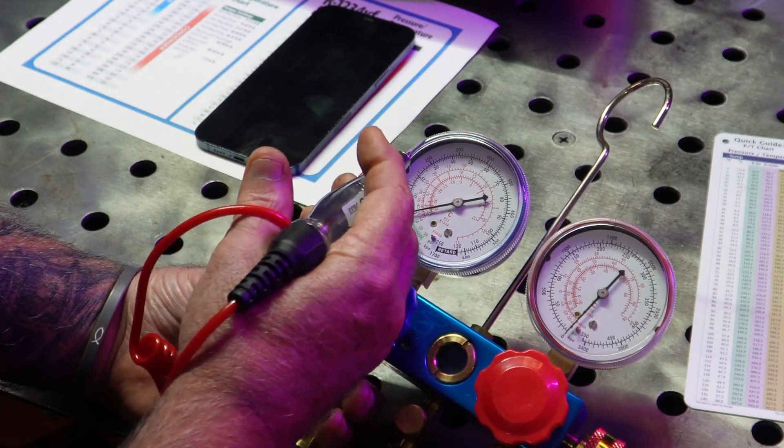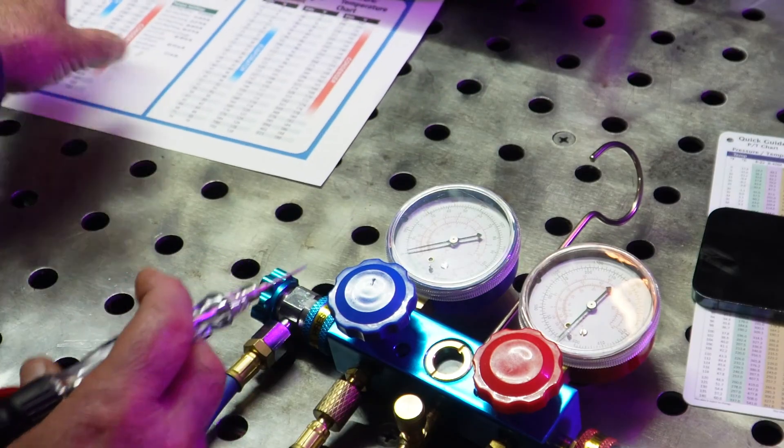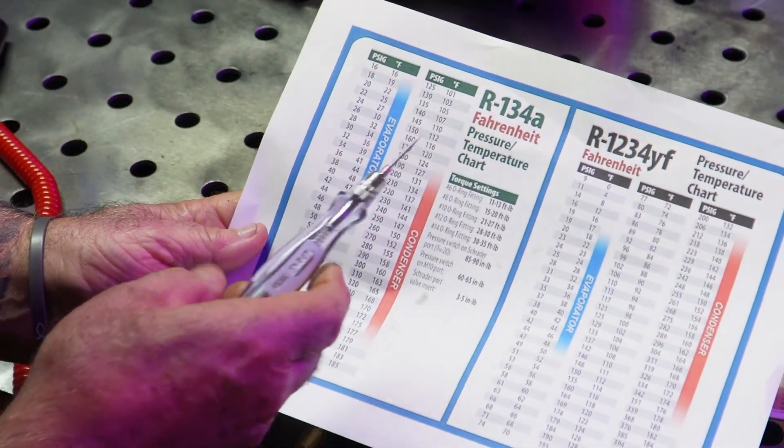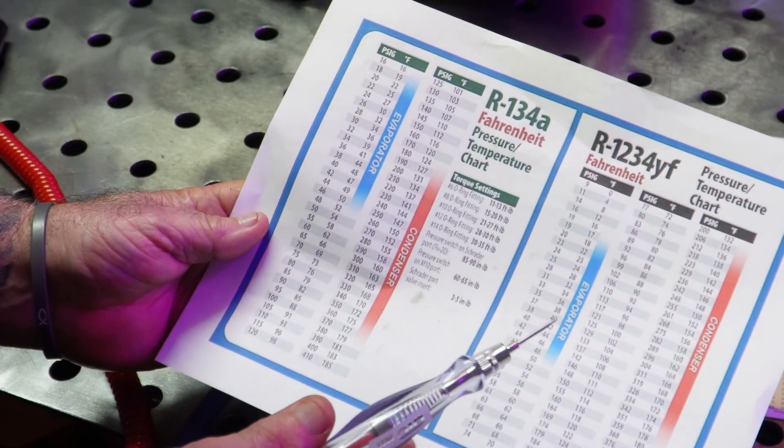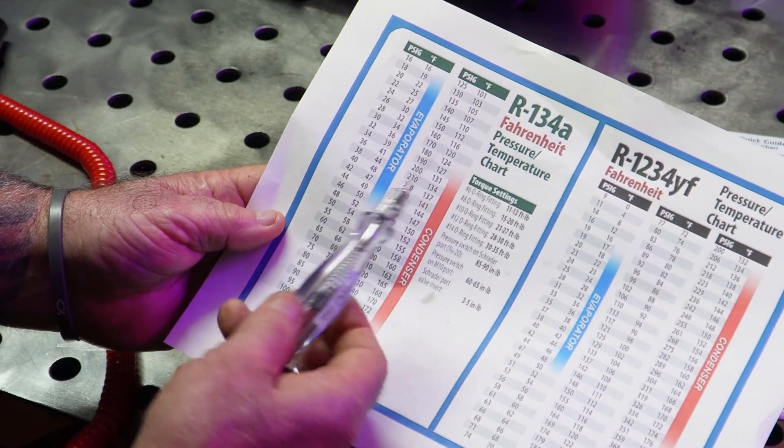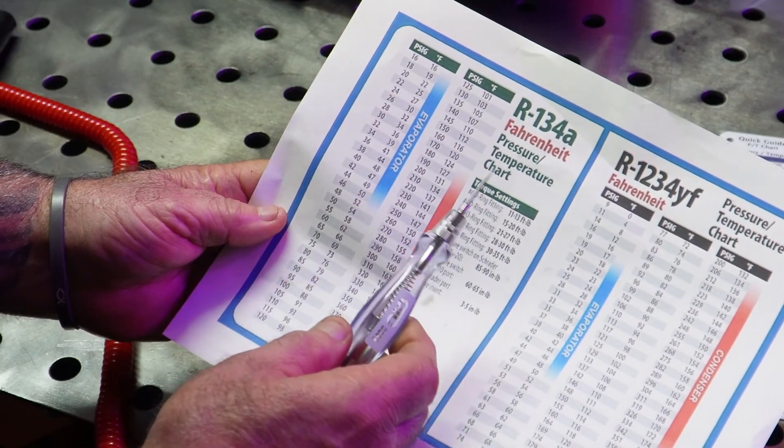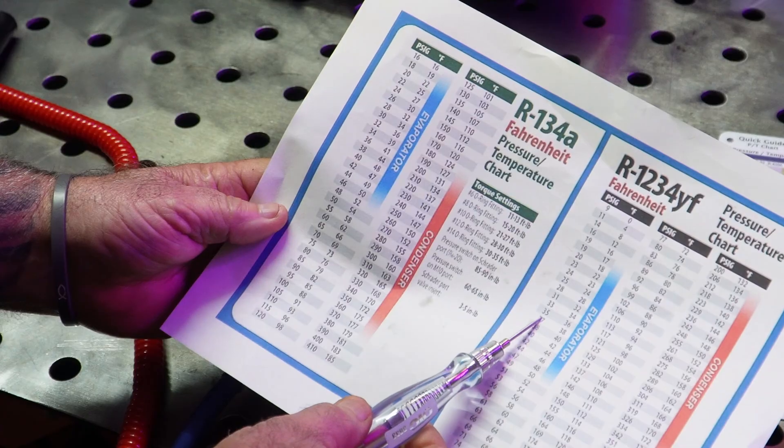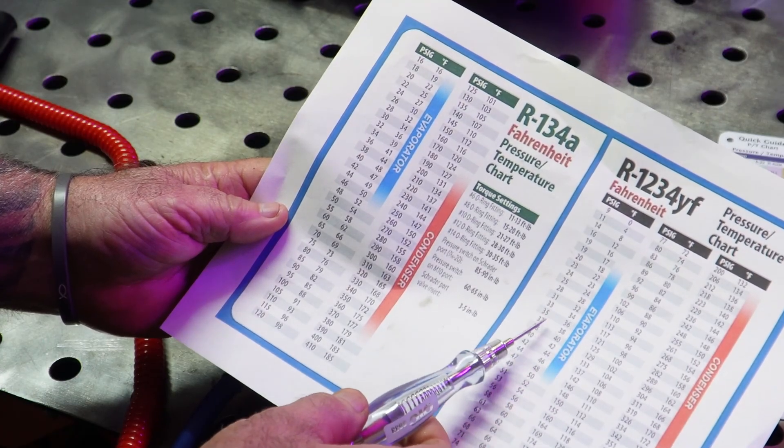Let me show you this chart. I printed this off the internet. This is R134a and this is R1234yf, the newer refrigerant used on modern cars. This one's being phased out, but it can still show you the pressure-temperature correlation. 36 PSI, 41 degrees. That's for R134a. Now these two refrigerants are very close in pressure. For R1234yf, 37 PSI is 38 degrees saturated temperature at the evaporator. So this actually gets colder at the same pressure.